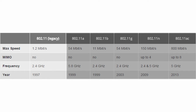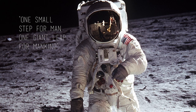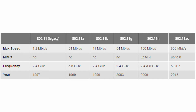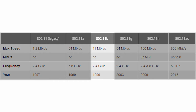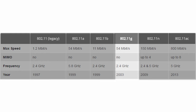The first WiFi standard is the legacy, which was really slow and even looks primitive compared to what we are using today. But that small step was quite significant. In 1999, the 802.11b became the most commonly used standard because of the lower cost. Three years later, the G standard came out and improved the WiFi speed dramatically.